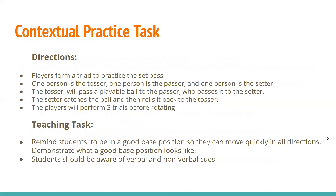Contextual practice directions: players form a triad to practice the set pass. One person is the tosser, one is the passer, and one is the setter. The tosser passes a playable ball to the passer who passes it to the setter — either a set pass or a bump pass depending on the height of the ball. If the ball is overhead, use the set pass; if it's a lower pass, use the bump pass and hit the ball in an upward fashion. The setter catches the ball and rolls it back to the tosser. After three trials, students rotate positions.